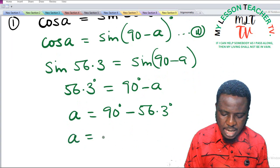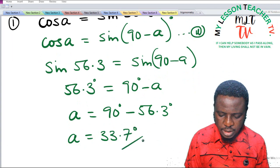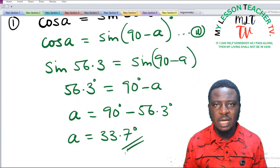And when you subtract, A is equal to 33.7 degrees. That is our answer.